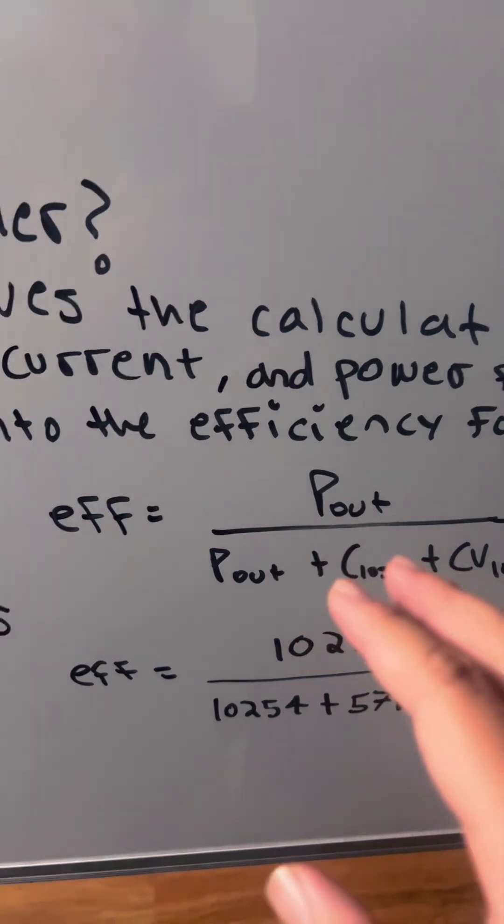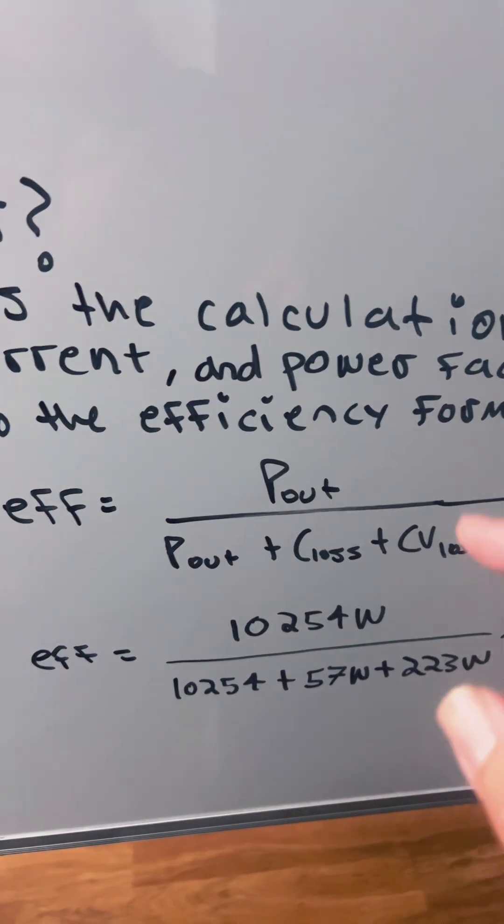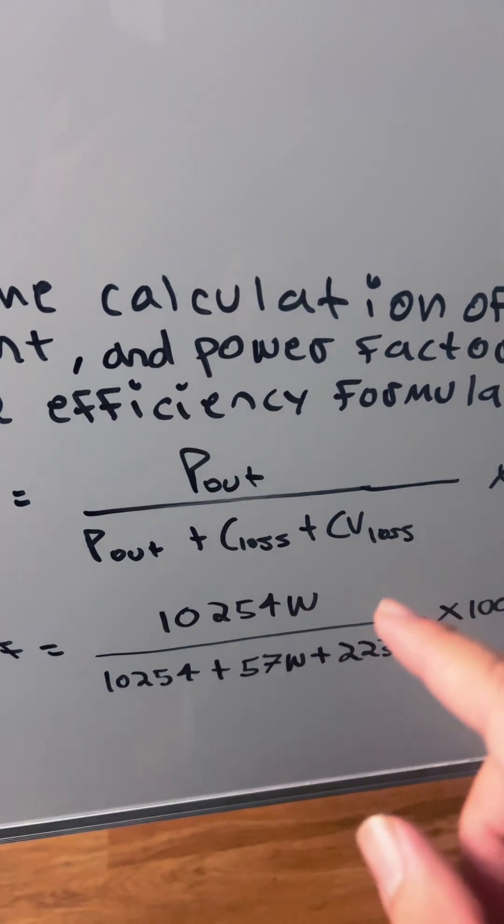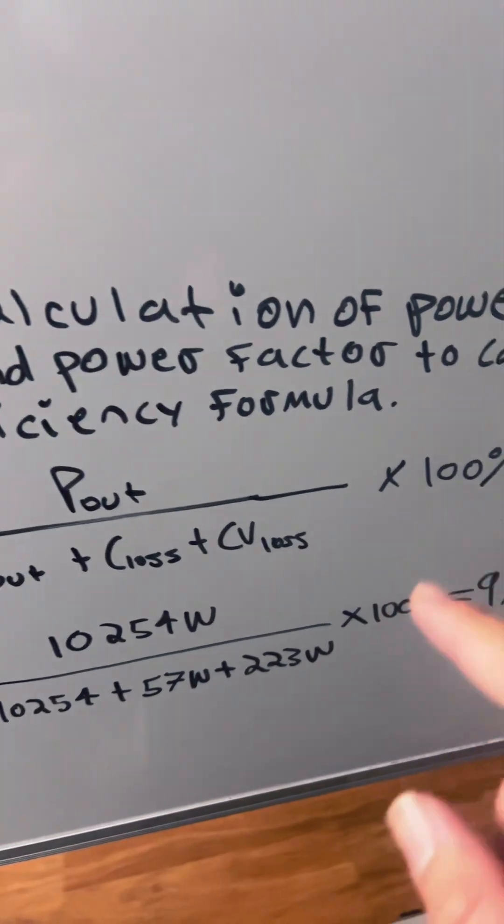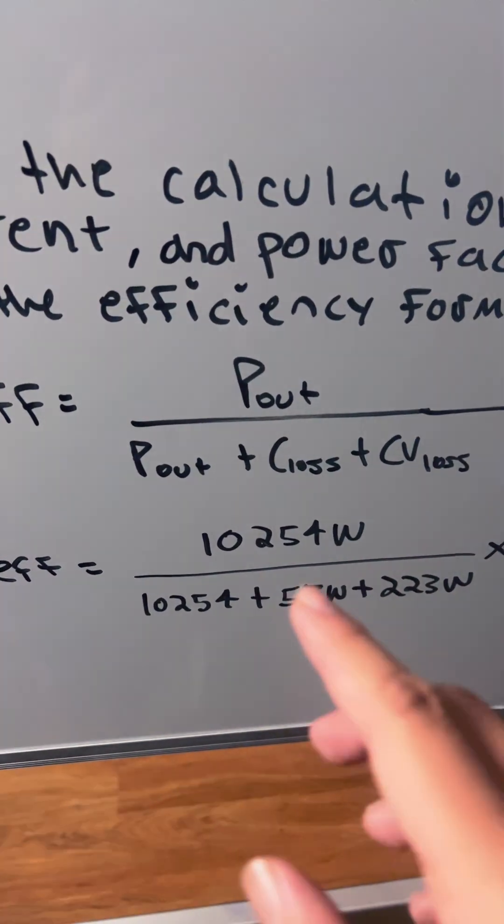The efficiency formula is: power output divided by (power output plus core losses plus copper losses) times 100%. So we're going to plug in the values.